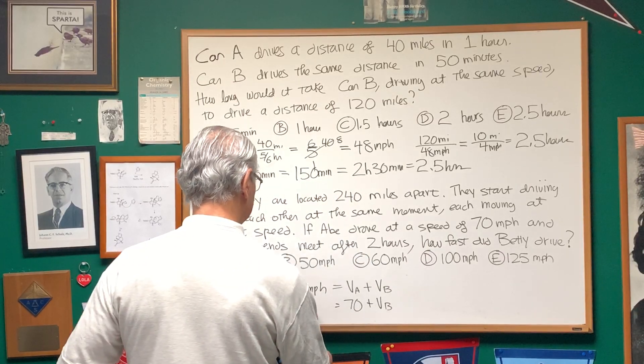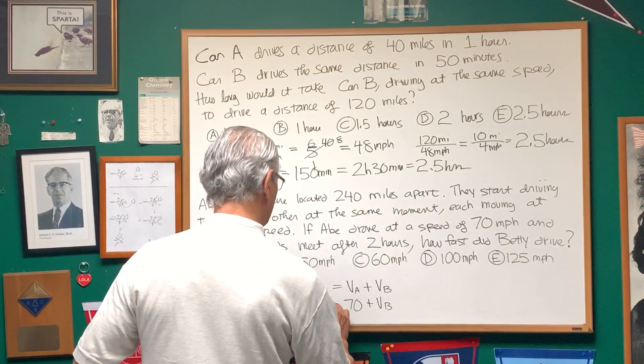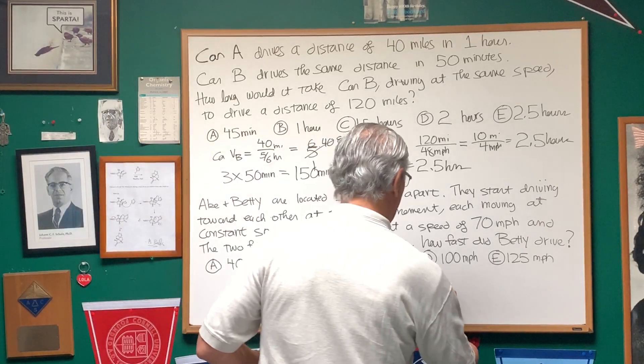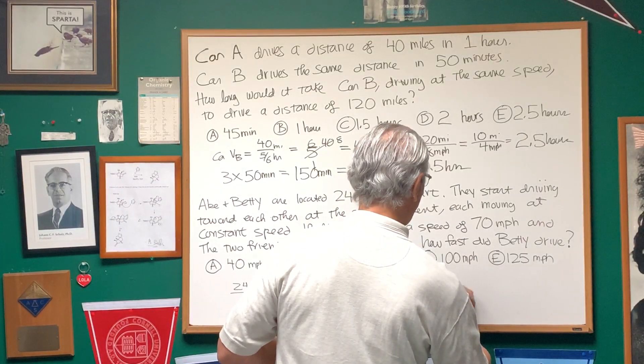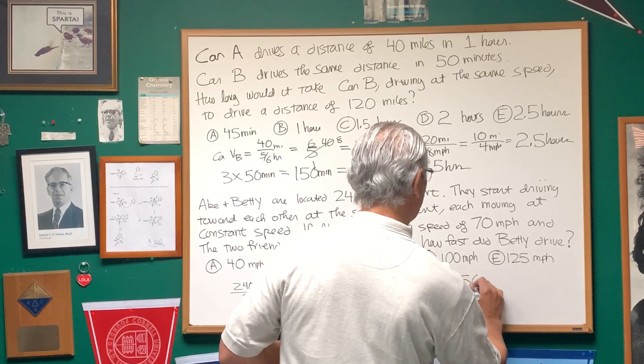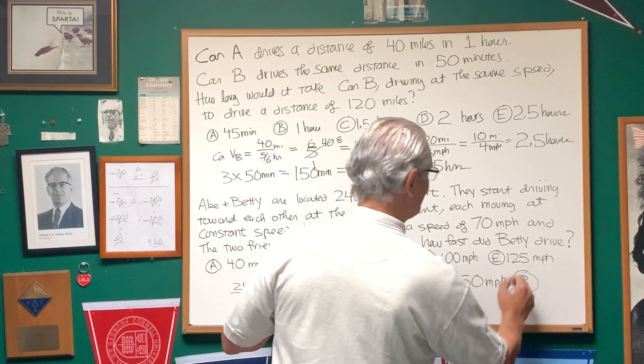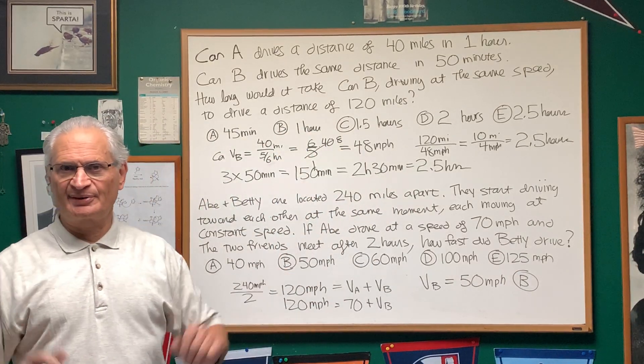And therefore, 120 miles an hour, if we subtract 70 from both sides, the velocity of Betty's car, car B, is going to be 50 miles per hour, and that's choice B. And it's as simple as that.